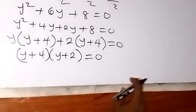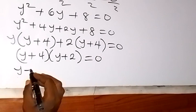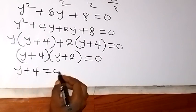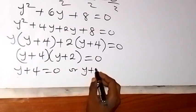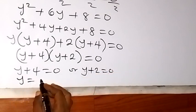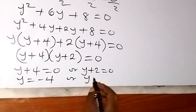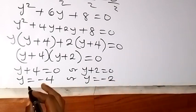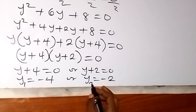That's (y plus 4) multiplied by (y plus 2), which equals 0. So either y plus 4 equals 0 or y plus 2 equals 0. From here, we have y equals minus 4 or y equals minus 2. We now have two values of y — let's call them y1 and y2.